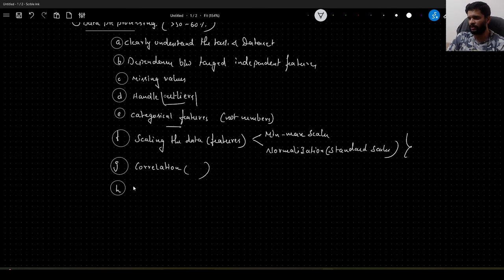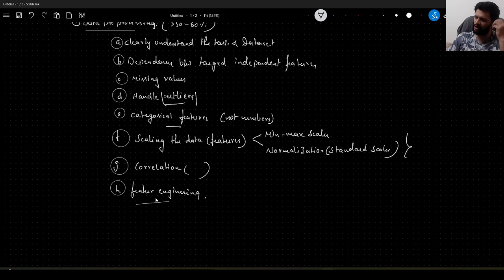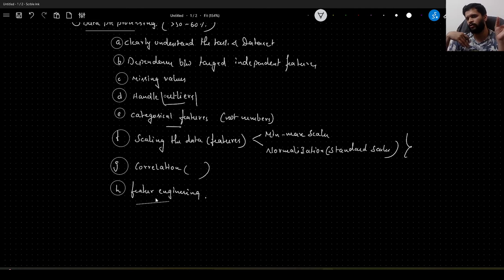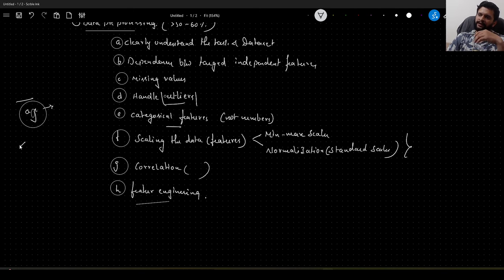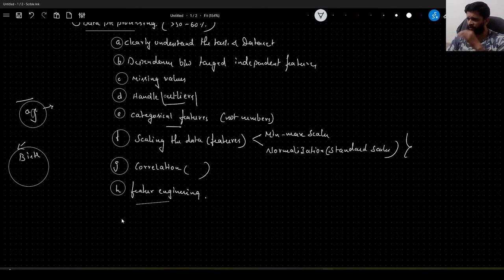Next comes something called feature engineering. For example, let's say we have a dataset that includes a person's date of birth and we already know the current year. Using these two things, you can derive a new feature called age. If age is not already present in the collected data, you can create this new feature and then drop the birth date. This is just one example of feature engineering.